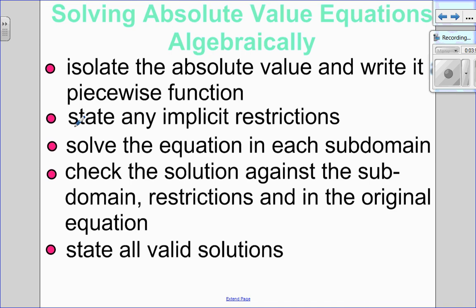In part 2 of the video, I want to look at how to solve an absolute value equation algebraically. The steps to follow: isolate the absolute value and write it as a piecewise function. Be on the lookout for implied restrictions — restrictions where both sides must equal a certain value. Then solve the equation in each subdomain, check against the subdomain and the original equation, and state all valid solutions. I have three examples we can work through.